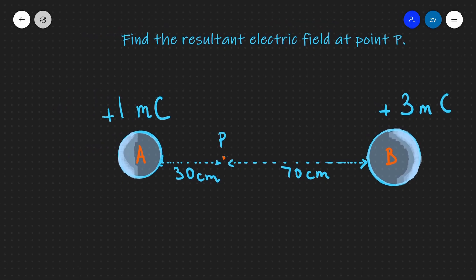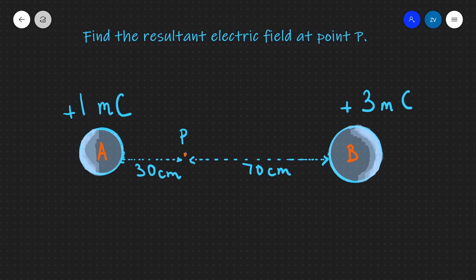Hi everyone! What we're going to be talking about today is finding the resultant electric field when we have more than one charge. Let's start off with an example in which we have two charges, charge A and charge B, with charges being one millicoulomb and three millicoulombs. Both are positive charges and the problem is asking us to find the resultant electric field at point P, which is 30 centimeters away from one charge and 70 centimeters away from the other.